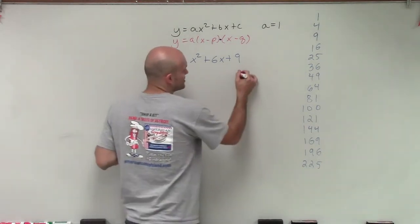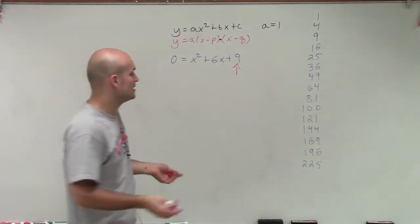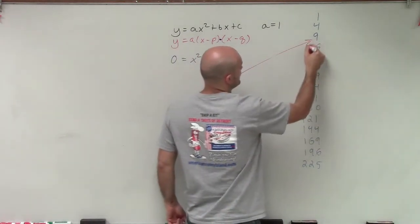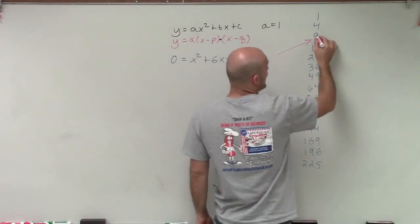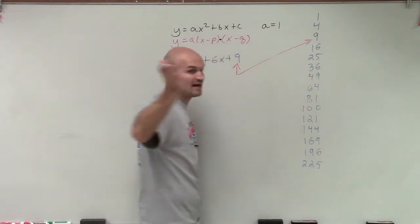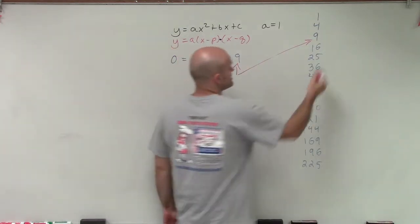So the first thing we always want to do is look at our c and determine, is that a perfect square number? Which, yes, you can see is one of our perfect squares. Now, 9 is a perfect square. There's a couple factors of 9: there's 9 times 1 and then 3 times 3.